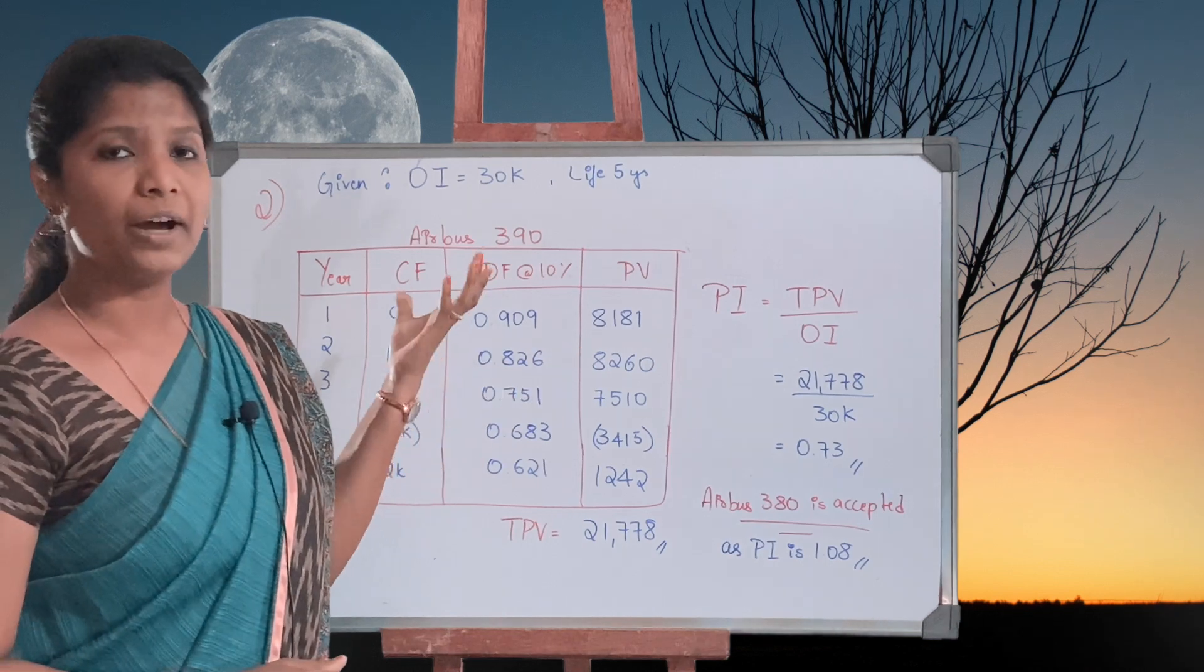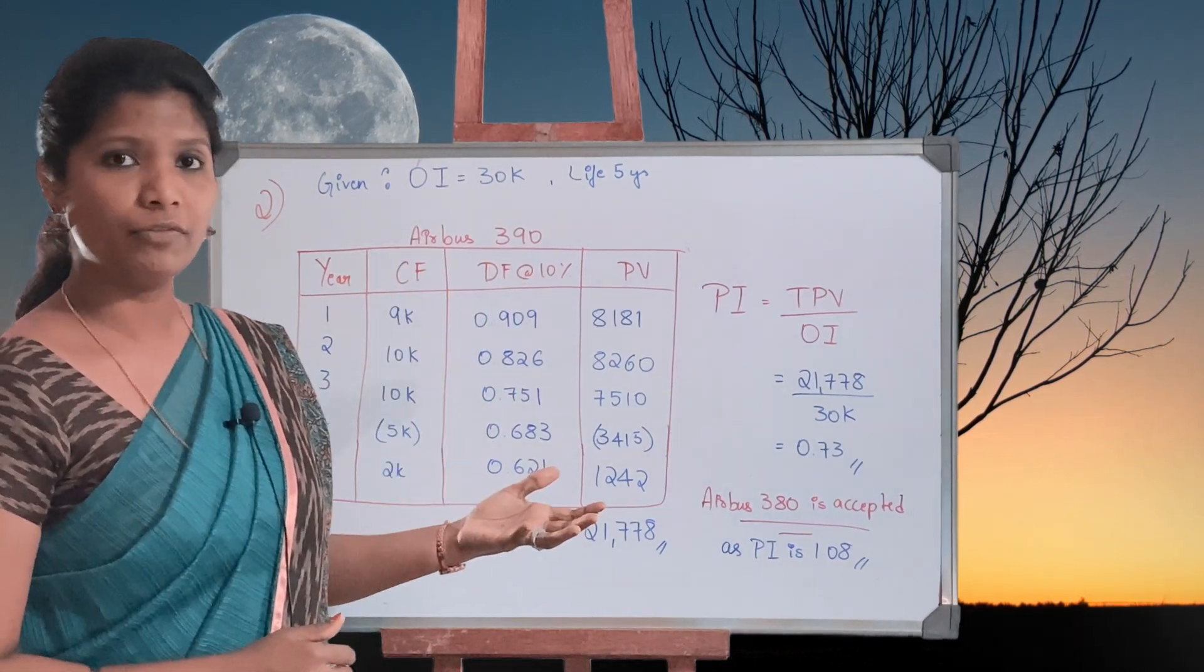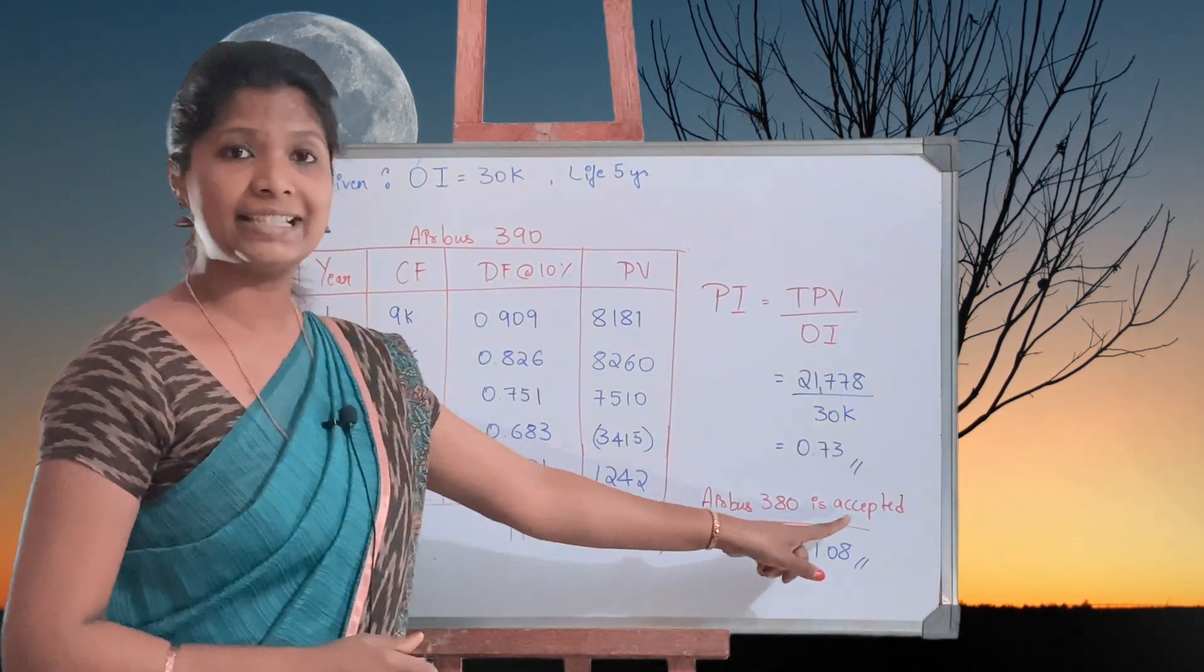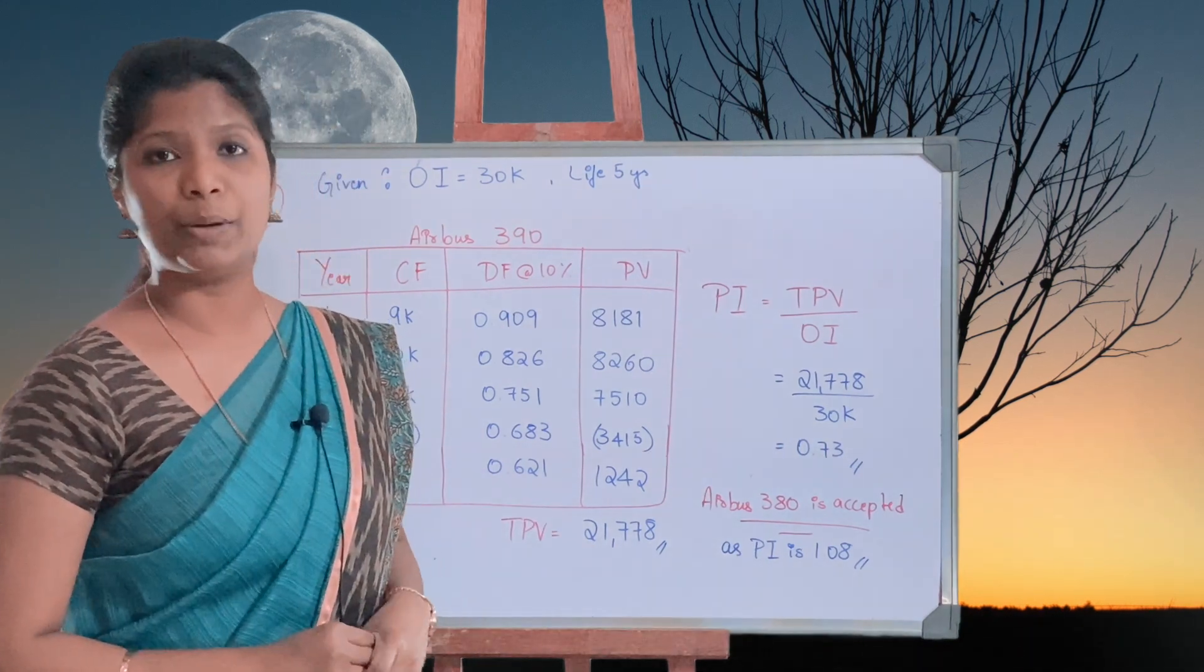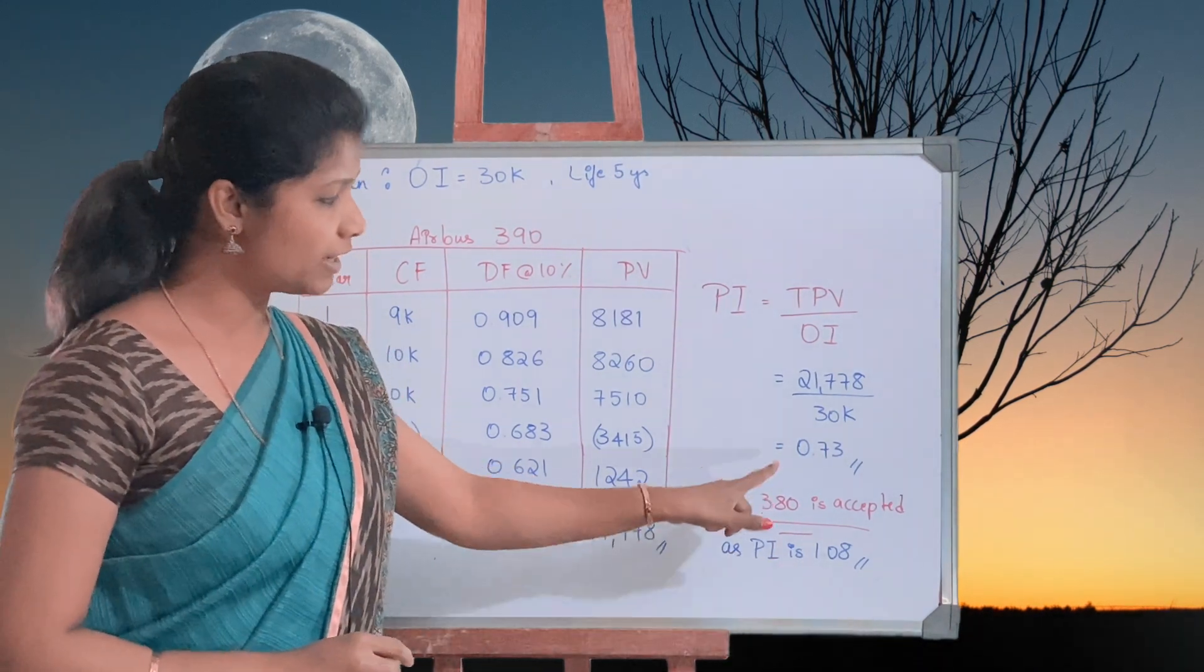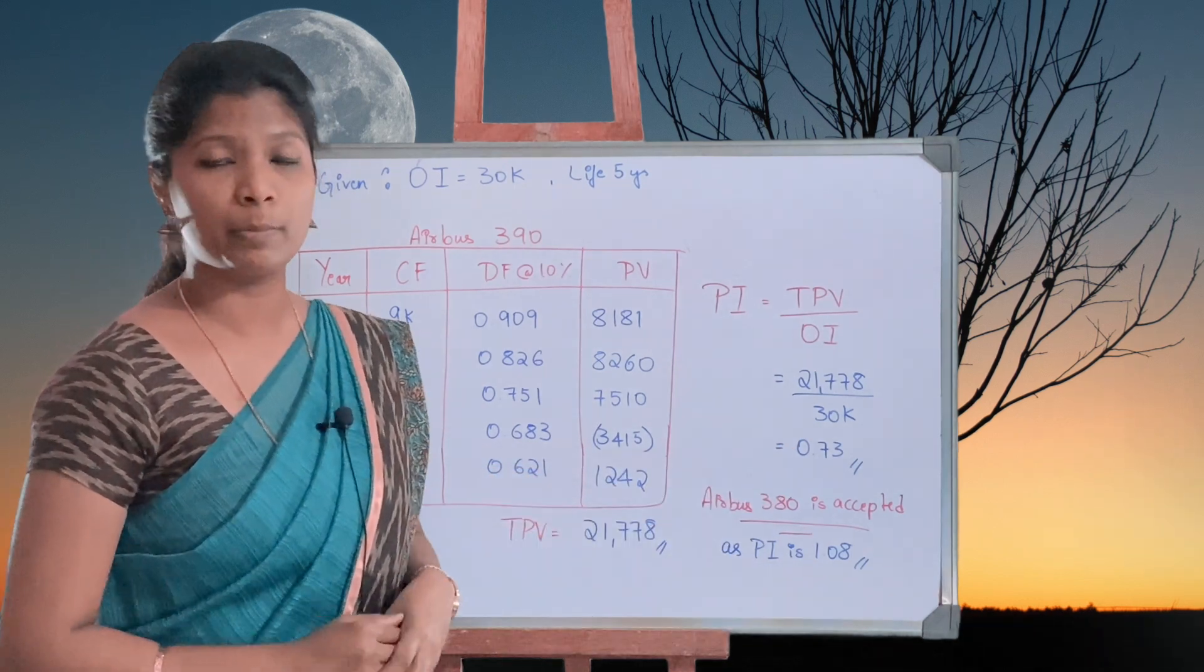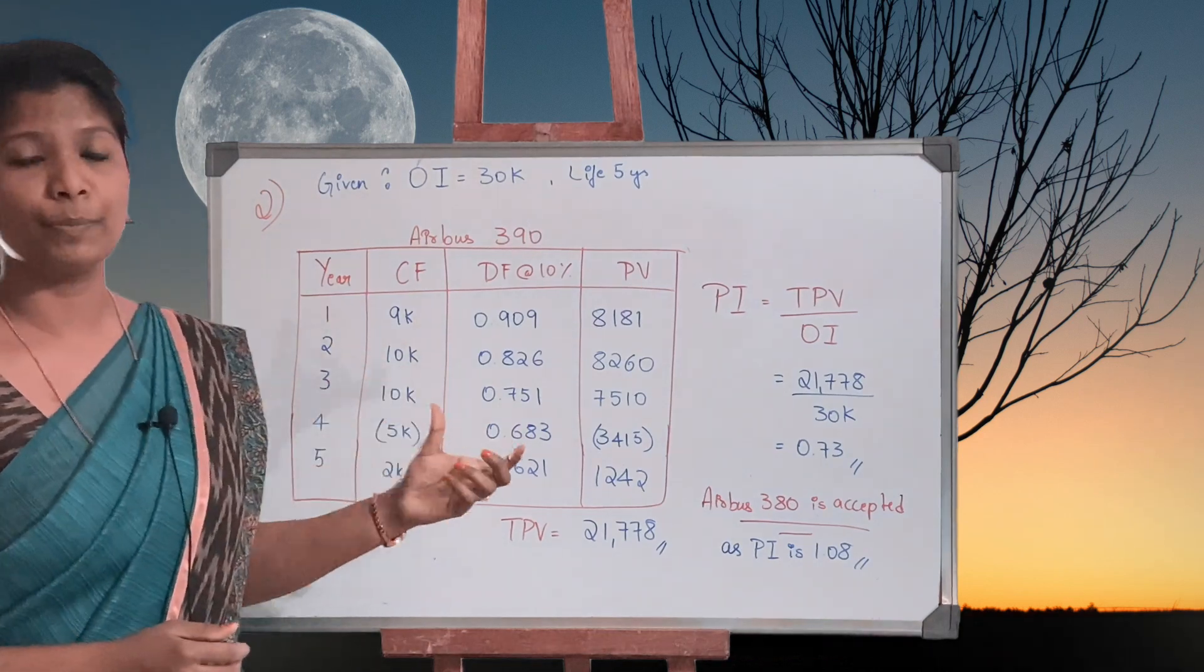Therefore, Airbus 380 is accepted as the Profitability Index stands at 1.08. If you can compare, you can see that the first Airbus is more profitable for the company than the second one. So this completes your topic, Profitability Index.